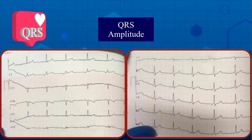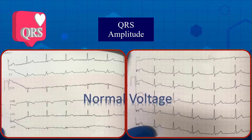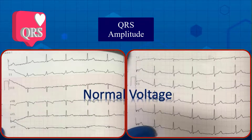Second: QRS amplitude. The QRS complexes are more than 5 millimeters in limb leads and more than 10 millimeters in precordial leads, so they are not low voltage. On the other hand, there is no finding in favor of ventricular hypertrophy. In general, the QRS complexes have normal voltage.